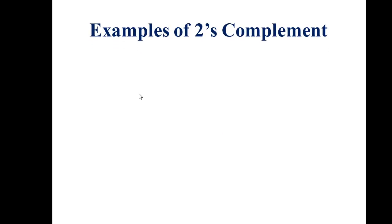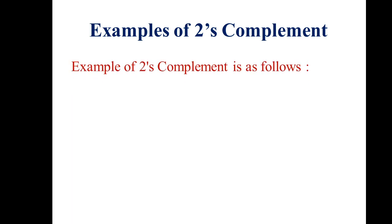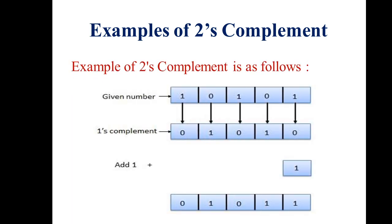Now let us take some examples of two's complement — how to solve it practically. We are talking about only binary numbers, not decimal numbers. We have taken one binary number: 10101. The first step says find out the one's complement of the given number.